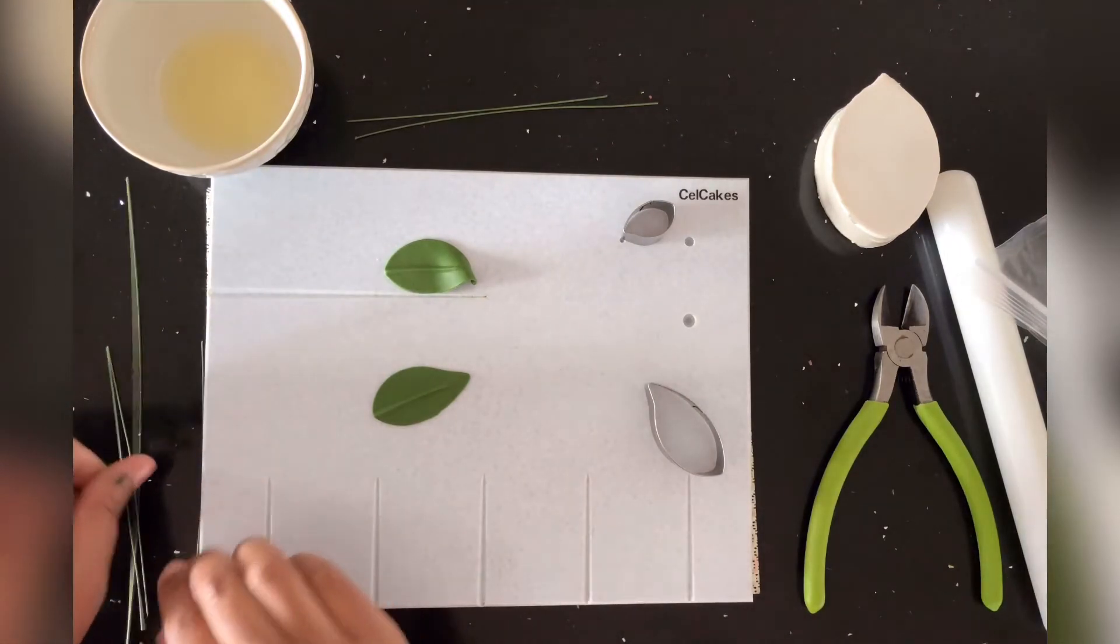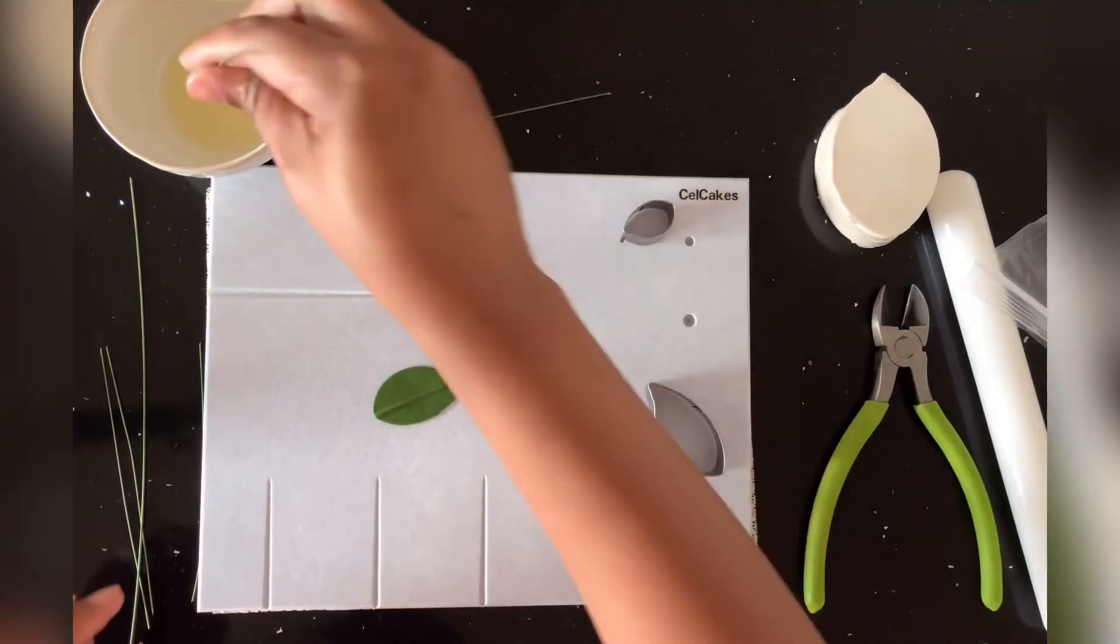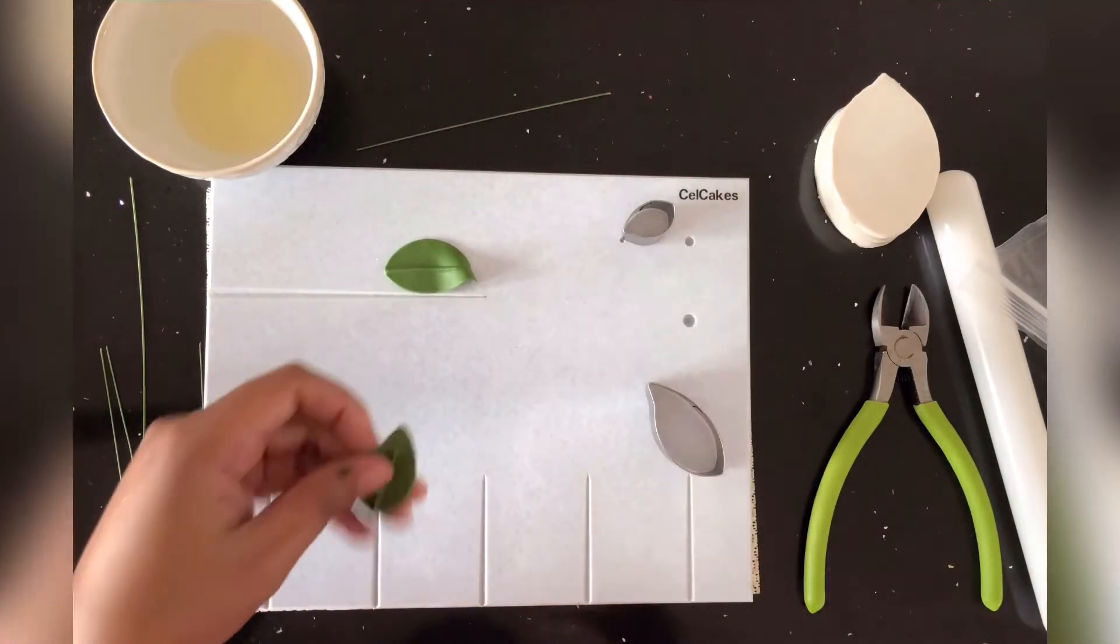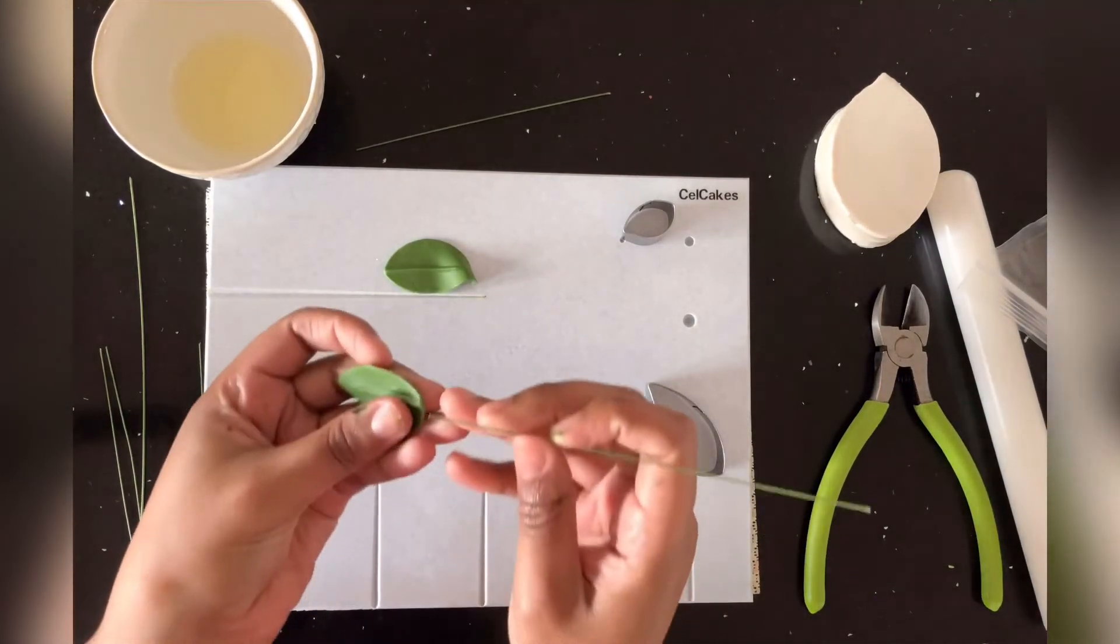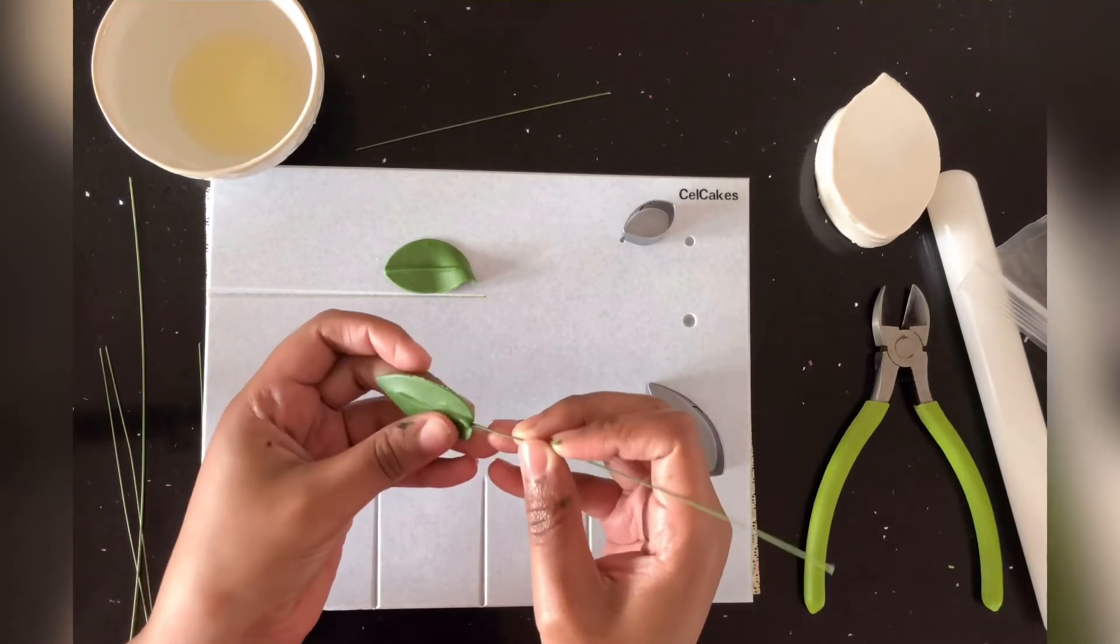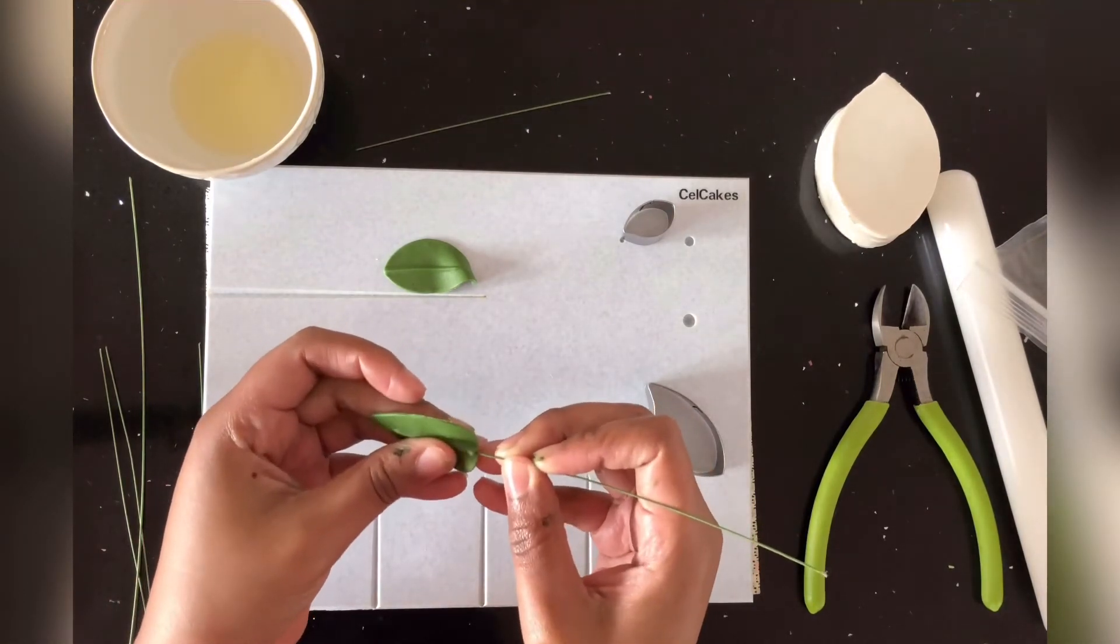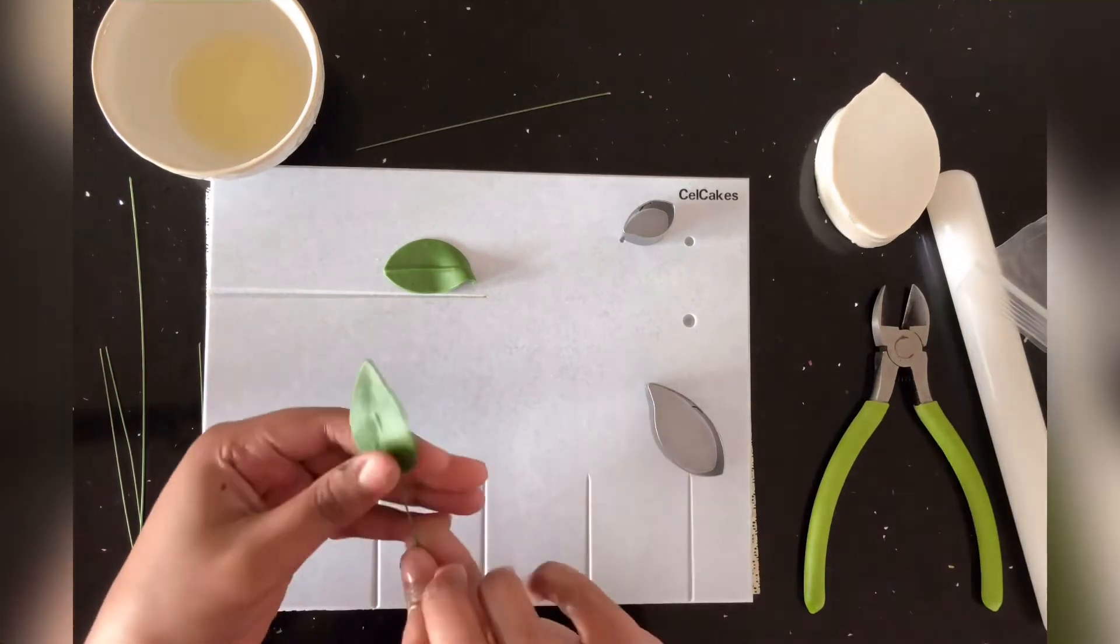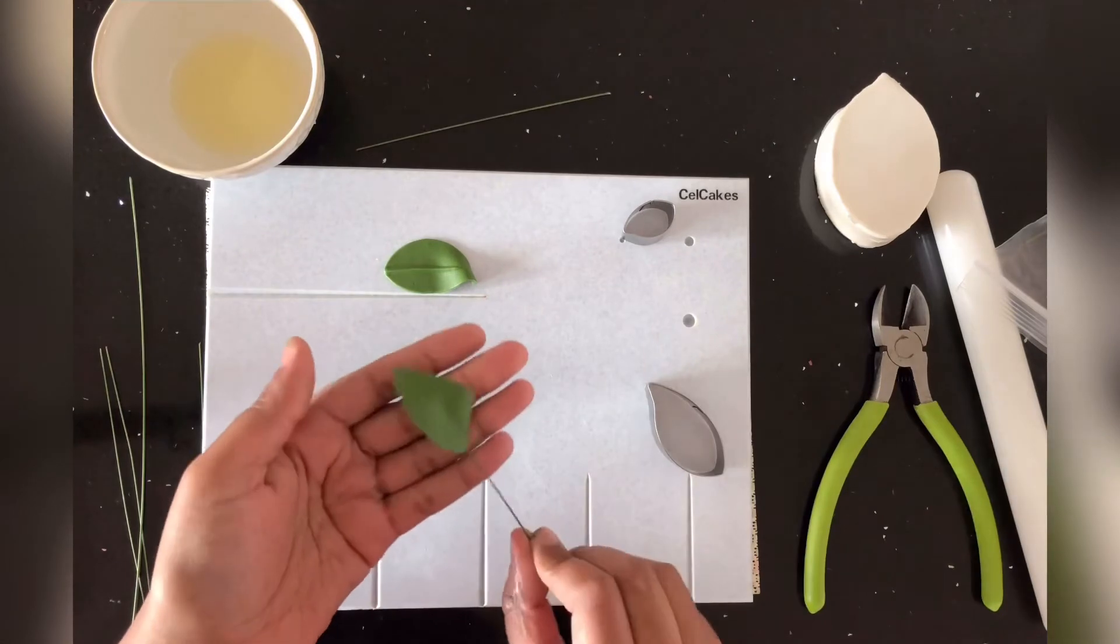Now taking your 24 gauge wire here, you're going to dip it into some egg whites, and you're going to insert into the bottom half of your leaf, just like so. Make sure that you're very gentle with this and you use your fingers as a guide as to where the wire is. That way you don't poke through the front.